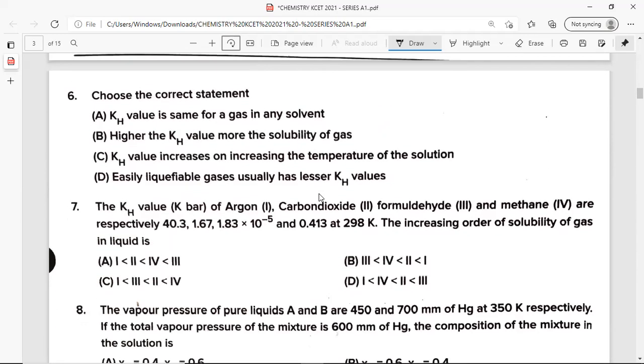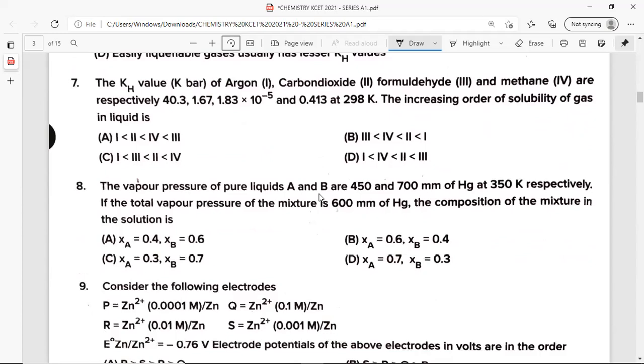Choose the correct statement. Among these options, the correct statement is option C: KH value increases on increasing the temperature of the solution. Question number 7: The KH value of argon, carbon dioxide, formaldehyde and methane are respectively 40.3, 1.67, 1.83 into 10 power minus 5 and 0.413 at 298 Kelvin. The increasing order of solubility of a gas in liquid is option A.